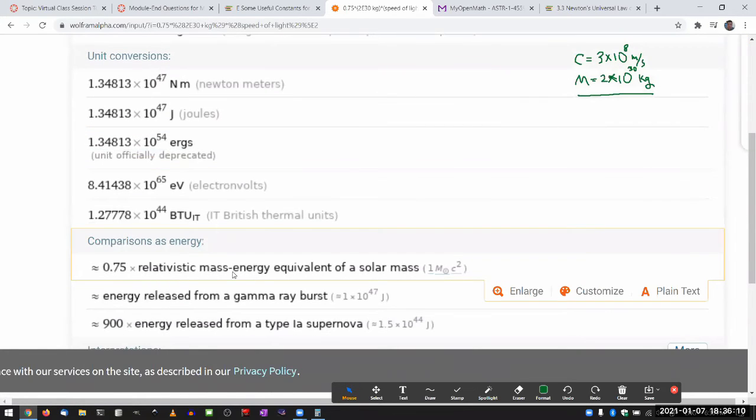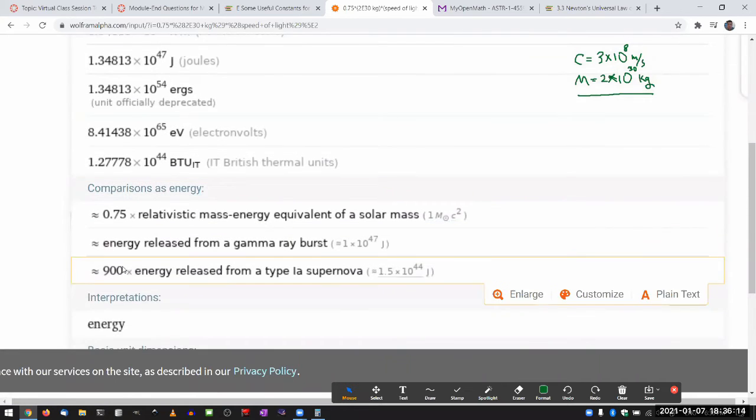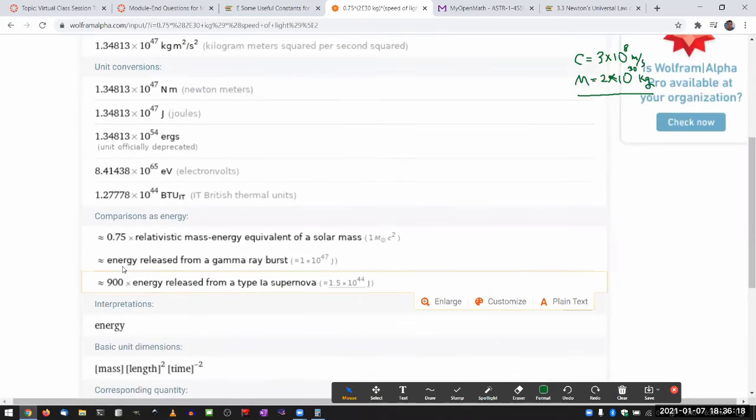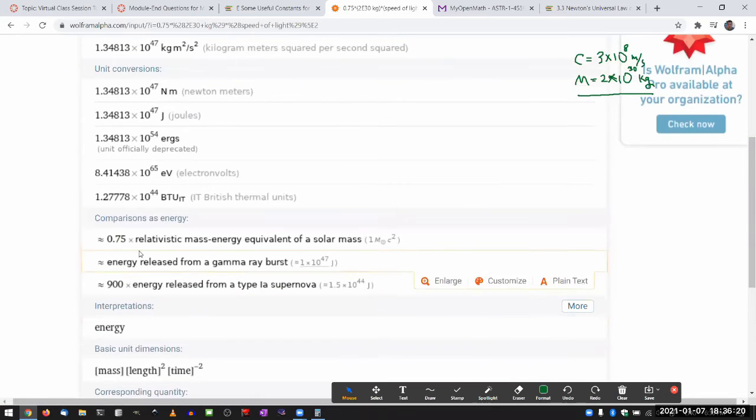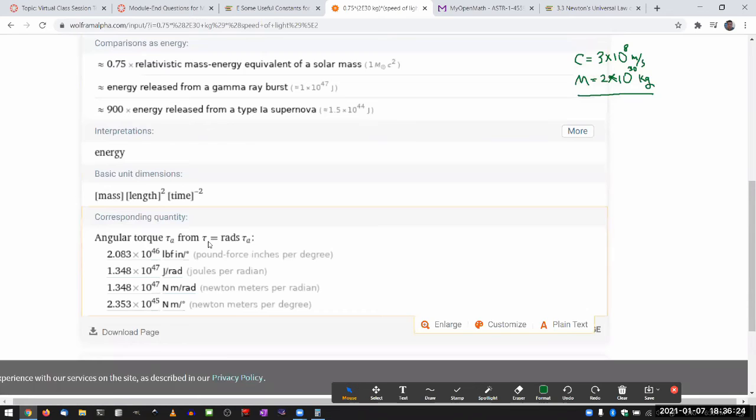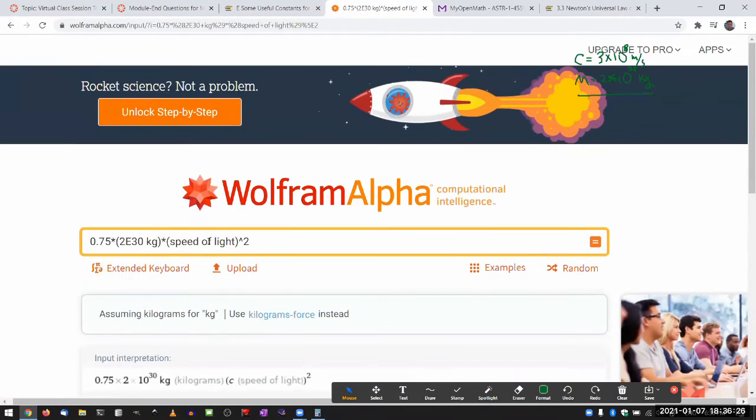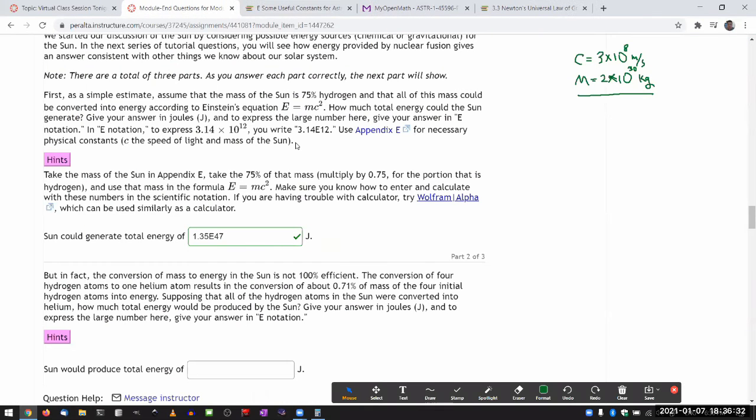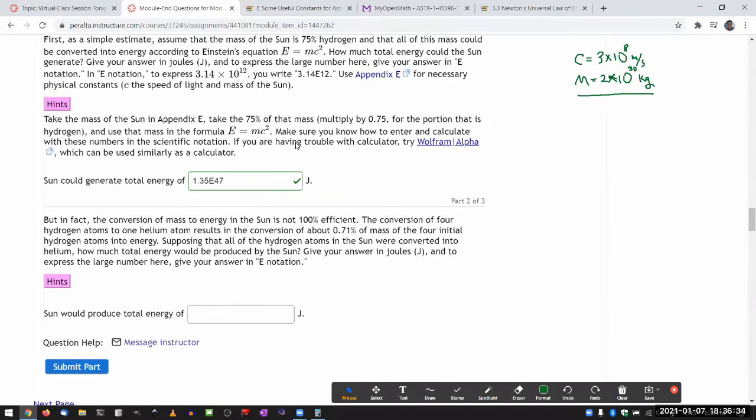And yeah, it is a relativistic mass energy equivalent of a solar mass. That is what I was calculating. And Wolfram Alpha, I think it's useful in many different ways. It's useful as a way to explore other things. So I want you to highlight that so that you know it's there. But for the rest of this session, I'll just do my scientific calculator calculation.